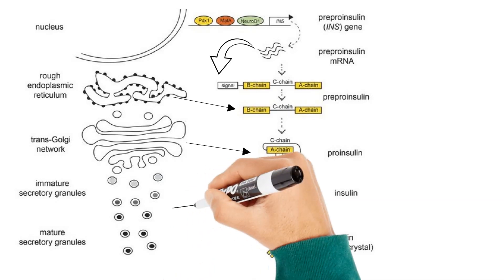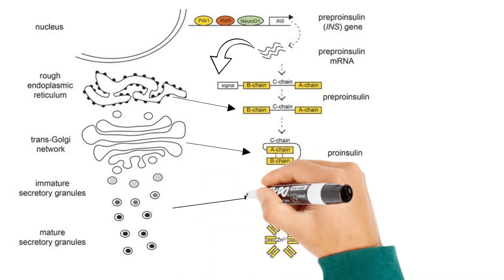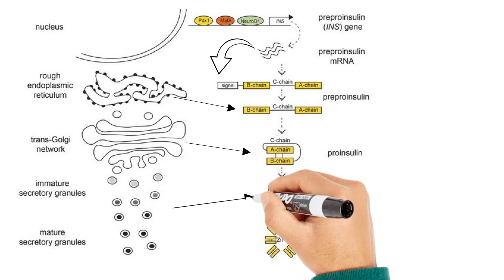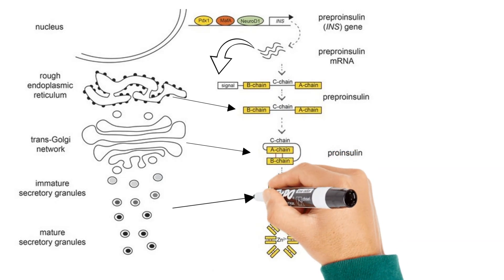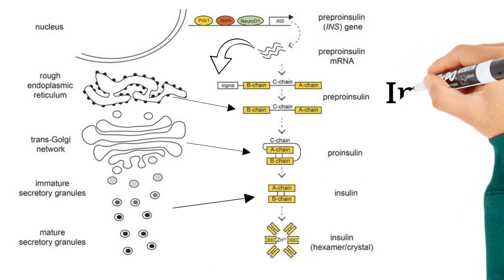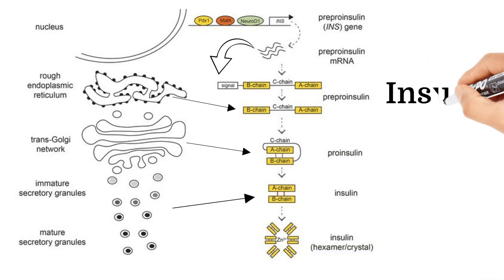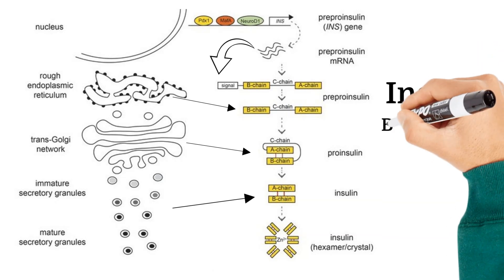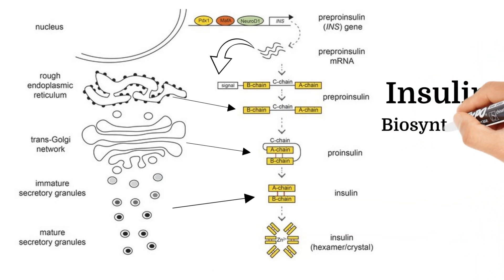The C-peptide domain is excised by specific endopeptidases and packaged with insulin into secretory granules in the Golgi apparatus. These secretory granules are released into the bloodstream upon stimulation of the beta cells.